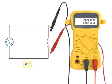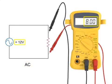Therefore, an AC voltmeter connected across the resistor in the AC circuit would read 10 volts.